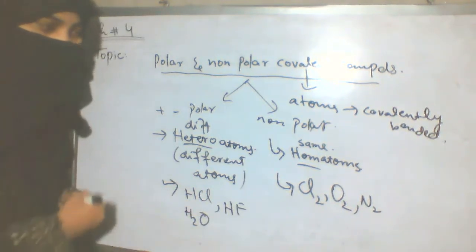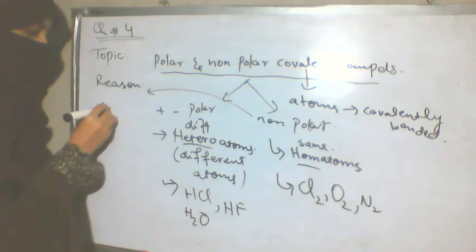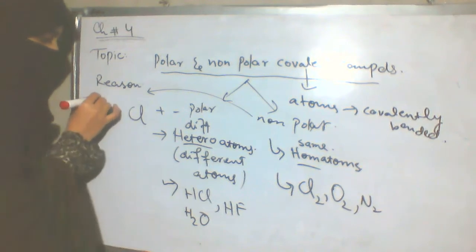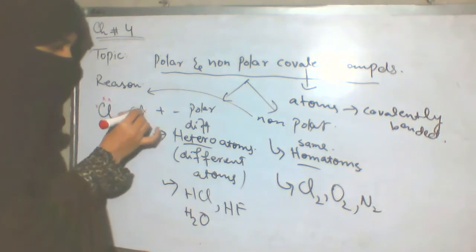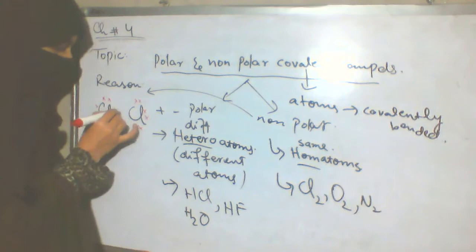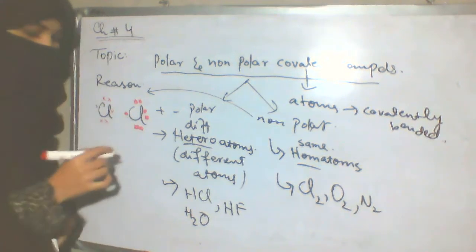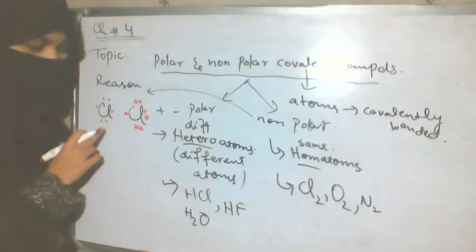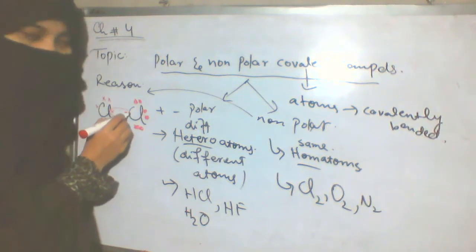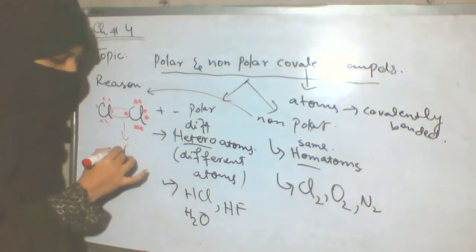Why is Cl₂ non-polar? This is chlorine and this is chlorine — both are the same. This one also has 7 electrons and this one also has 7 electrons. We can show the electron dots for each chlorine atom. Each contributes one electron to make the covalent bond.